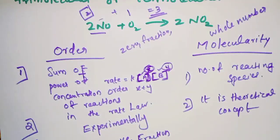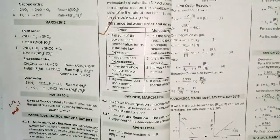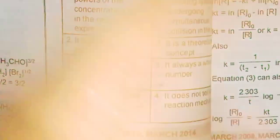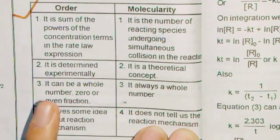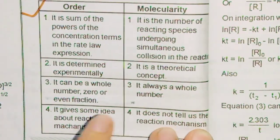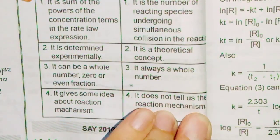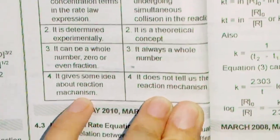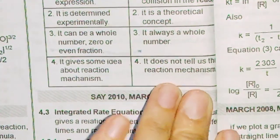What is the number of reacting species? First, what is the order, and what is the molecularity? Order is determined by experiment and can be zero, a whole number, or a fraction. Molecularity is theoretical and is always a whole number.